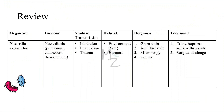Let's review everything. The organism is Nocardia asteroides, responsible for nocardiosis with three types: pulmonary, cutaneous, and disseminated — also called CNS nocardiosis. It is transmitted via inhalation, inoculation, and trauma. It is found in the environment, particularly in soil, with humans as hosts. Diagnosis is based on gram staining, acid fast stain, microscopy, culture, and radiology. Treatment is trimethoprim-sulfamethoxazole, with surgical drainage for abscesses.